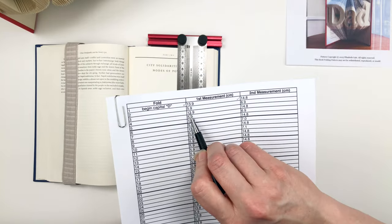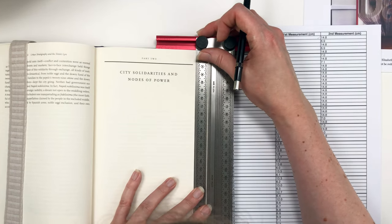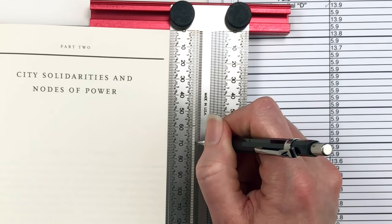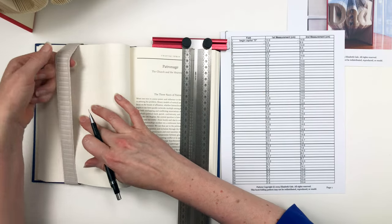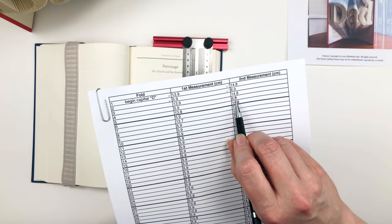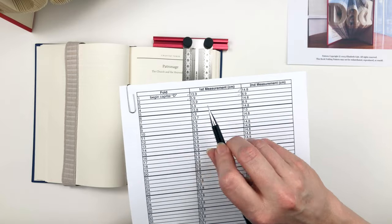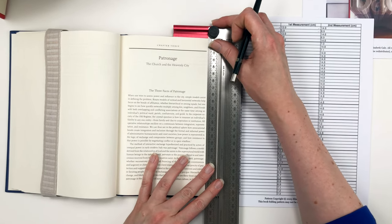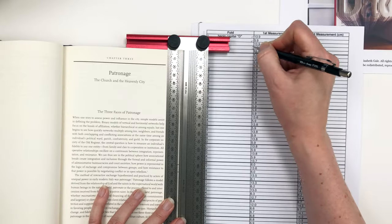And for fold number two, we've got measurements of 5.9 and 6.9. And for fold number three, measurements of 13.9 and 14.8 again. And sometimes the measurements will repeat in the pattern. That is not a typo, that just helps build up the design. So we're going to repeat the measurements of 13.9 and 14.8.